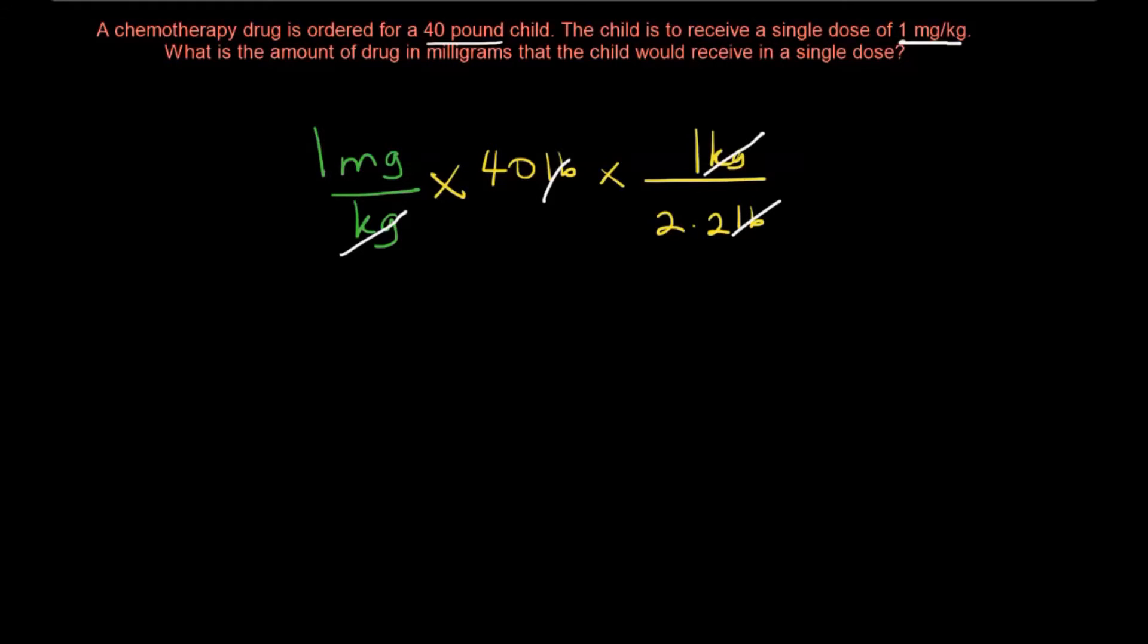So all we need to do at this point in time is simply to multiply everything in the numerator which would be one milligram times 40 and divide that by what is in the denominator. So 40 divided by 2.2 that gives you 18.18 milligrams.